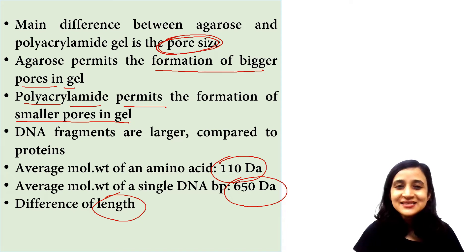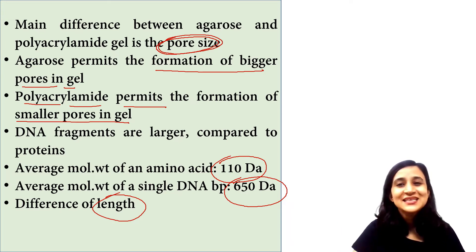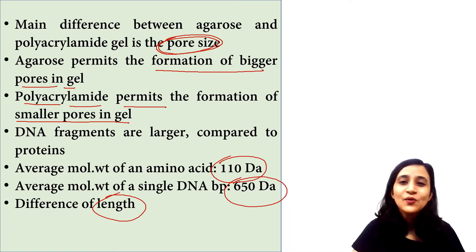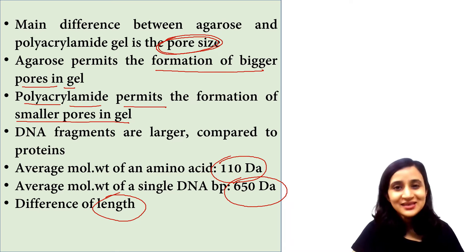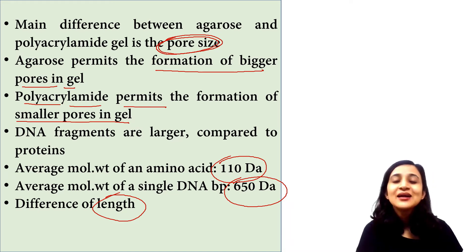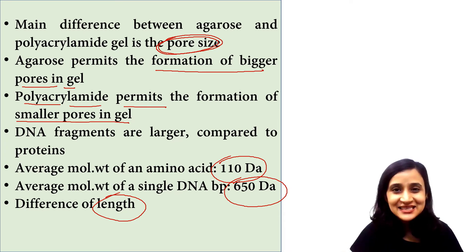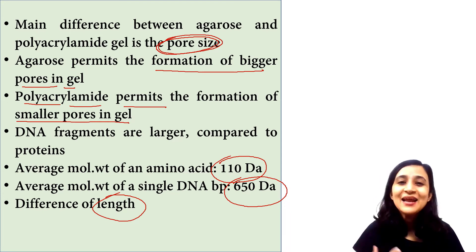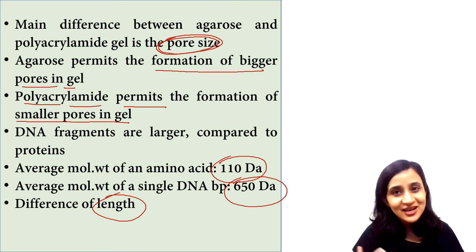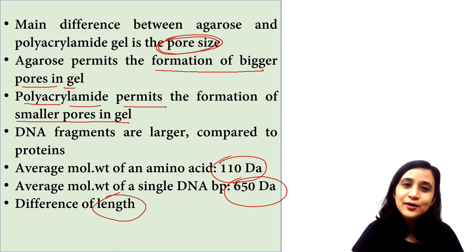If we talk about length, a protein molecule contains fewer amino acids compared to DNA, which has a huge number of base pairs. Three nucleotides of DNA make one codon, and one codon codes for one amino acid. Additionally, non-coding or junk nucleotides are also present in DNA. So DNA is longer, having many more nucleotides, and to move in a gel it requires larger pores compared to a protein molecule.